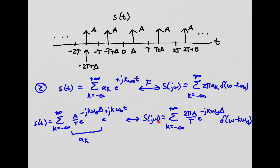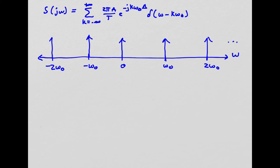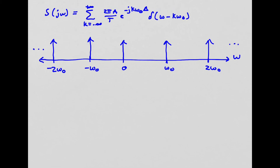Now the question is, can I sketch that? What does this equation tell me about the signal? This tells me I have an infinite series of impulses, with spacing ω₀ between them. So I get impulses at 0, ω₀, 2ω₀, and so on going out forever, and also at the negative frequencies −ω₀, −2ω₀, etc. I can draw these impulses at each of those locations.